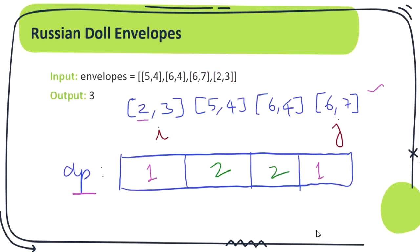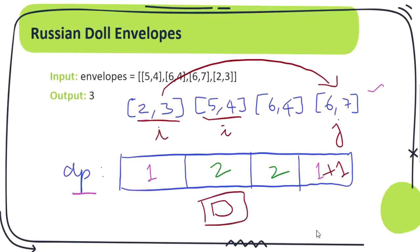Now j moves to the last envelope, 6,7. We check at each stage how many dolls we can put in. Starting from i=2,3: can we put 2,3 into 6,7? Yes, so we add 1. Moving i to the doll of 2,3 and 5,4: can we put these two envelopes into 6,7? Since 5,4 is less than 6,7 in both dimensions, yes. So far we have 2 dolls going into 6,7, making it 3. We check which is maximum — 2 or 3 — and 3 is maximum, so we fill the array with 3.